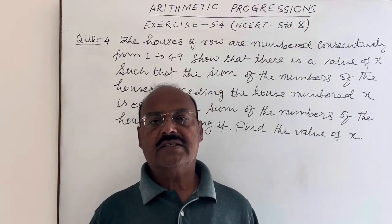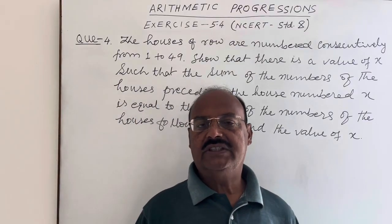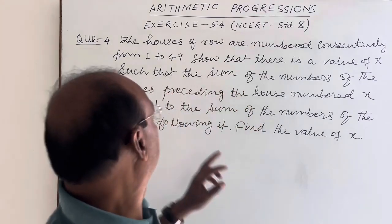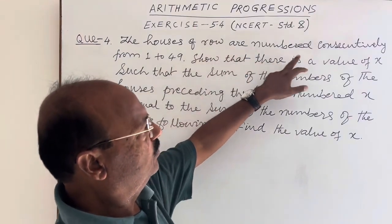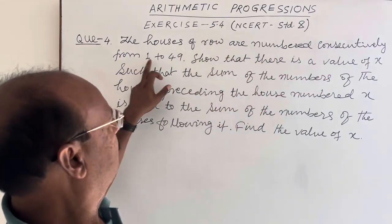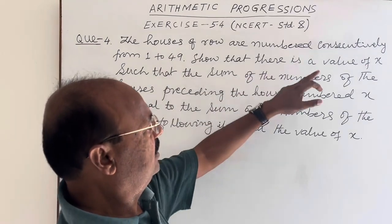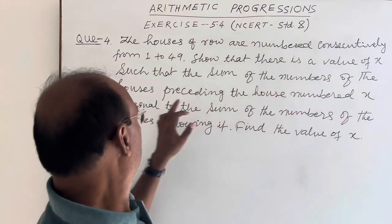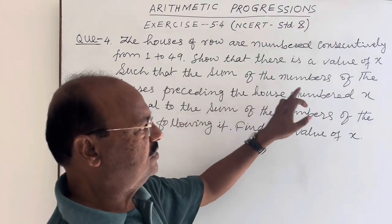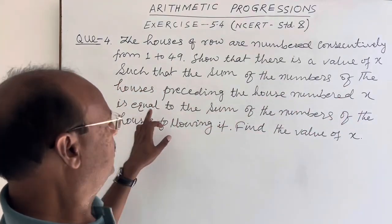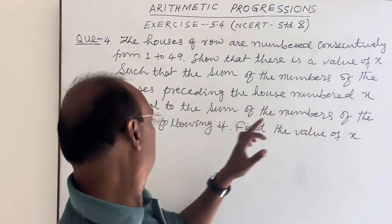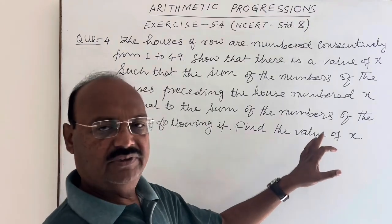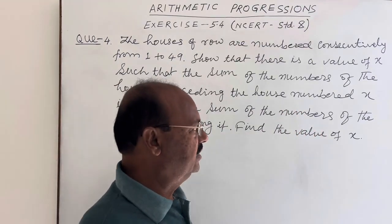This is question number 4 from exercise 5.4 of the chapter Arithmetic Progressions of standard 10. The question is: the houses of a row are numbered consecutively from 1 to 49, such that there is a value of x such that the sum of the numbers of the houses preceding house number x is equal to the sum of the numbers of the houses following it. Find the value of x.